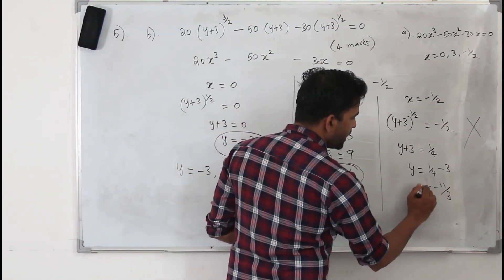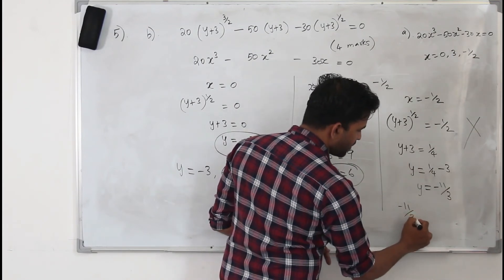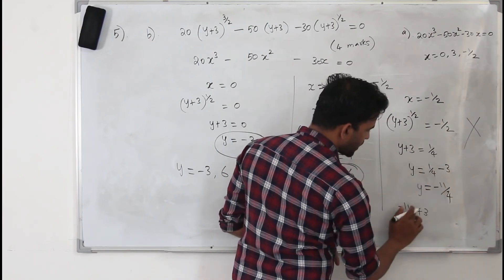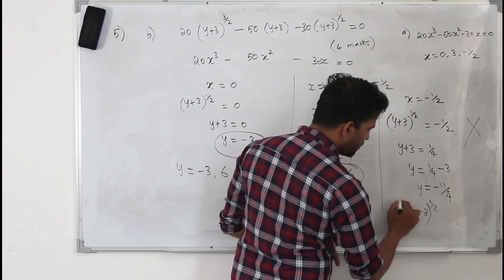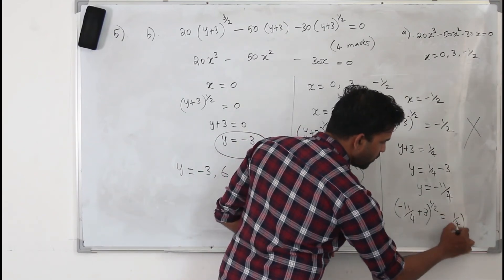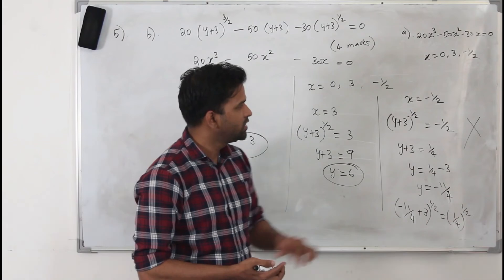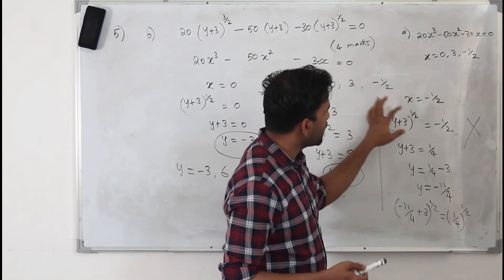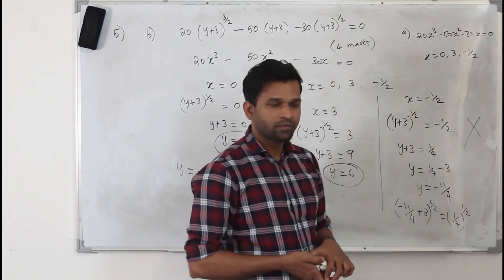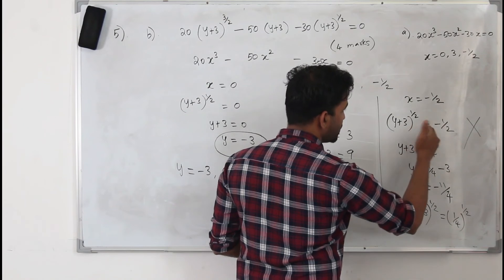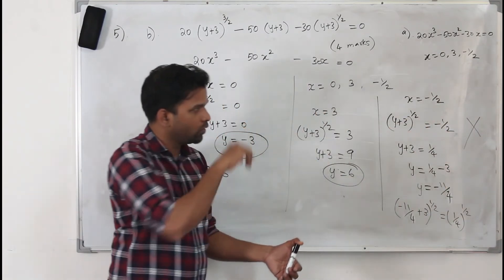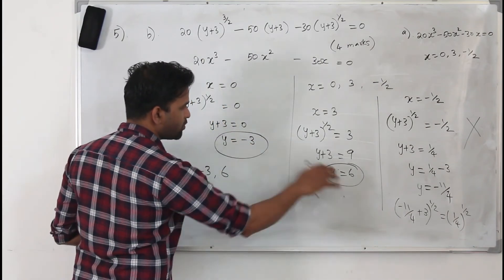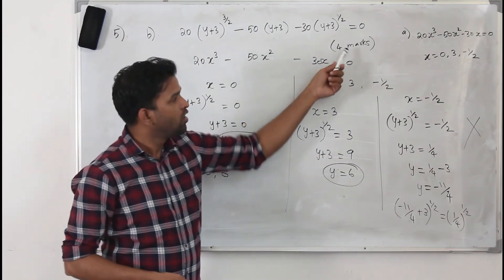Don't write the value y equals minus 11 over 4 as your answer, because when you substitute y equals minus 11 over 4, (minus 11 over 4 plus 3) to the power of one half equals (1 over 4) to the power of one half which is strictly positive one half, not minus one half. You can't get a real number solution from this, so you void it. You have two solutions only: y equals minus 3 and y equals 6. This question has four marks.